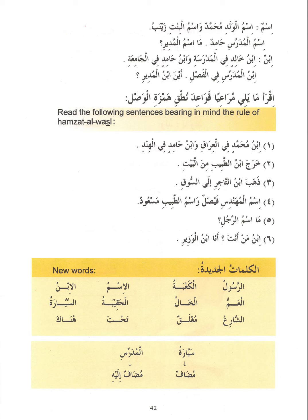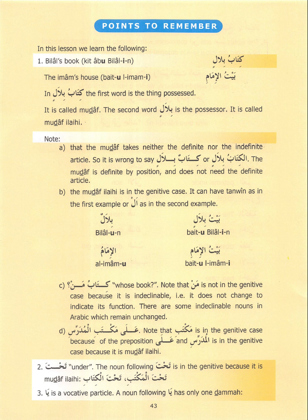You can read the sentences incorporating the ruling of Hamzat al-wasl — for example: Ibnu Muhammadin, Ibnu Hamidin, Ibnu man anta? Ana Ibnu al-wazir. Here you have three types of the detached pronouns — damir munfasil: al-gha'ib (third person), al-mukhatab (second person: anta, anti, antuma, antum, antunna), and al-mutakallim (first person: ana, nahnu). The main point of this session is the mudhaaf mudhaafun ilayh construct, along with new terminology to add to your notebooks.